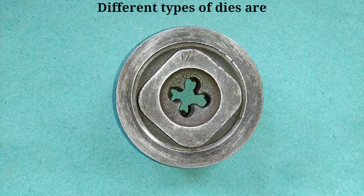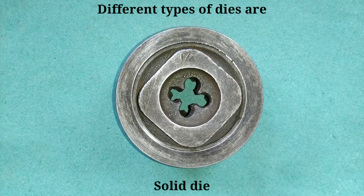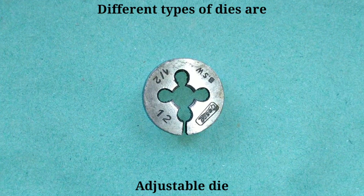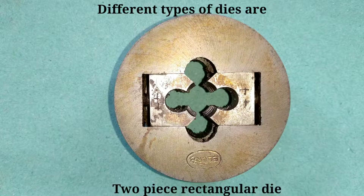Different types of dies are: solid die, adjustable die, and two-piece rectangular die.